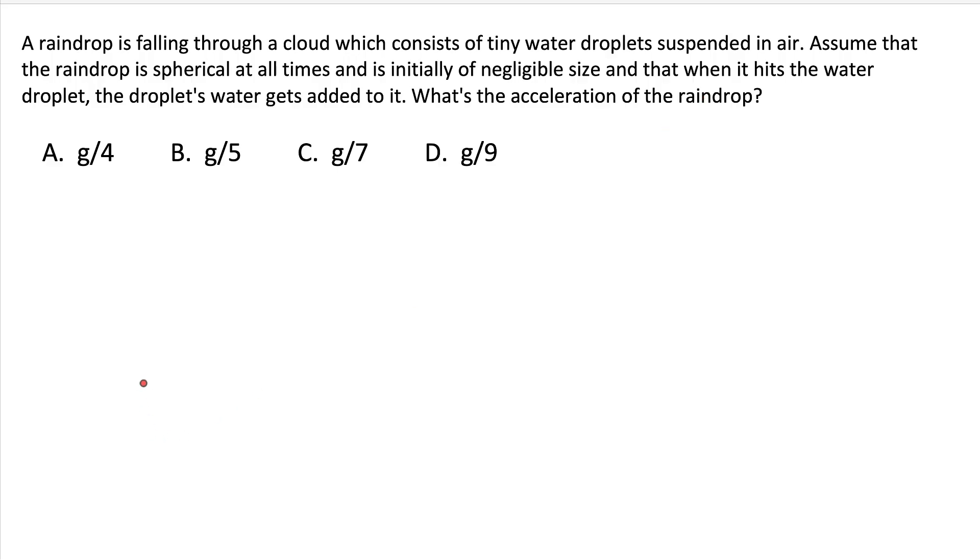Pretty interesting question, and if you think about it, this is also a pretty realistic question. So what's happening is that there is a raindrop falling through the cloud, and the cloud has tiny water droplets. As it hits those droplets, they simply get added to the raindrop. So the raindrop size is consistently increasing, and therefore we need to figure out the acceleration of the raindrop.